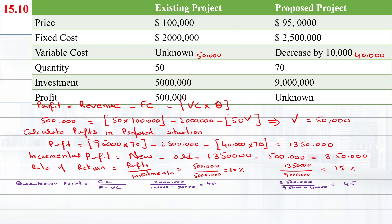Lastly, we have to find whether the firm is exposed to more or less business risk than the old one. Business risk will be measured by using fixed cost as a percentage of total cost. Business risk equals fixed cost divided by total cost. For the existing product, fixed cost is $2,000,000 divided by $2,000,000 plus total variable cost of $2,500,000. Business risk for the first product is 44.44%.